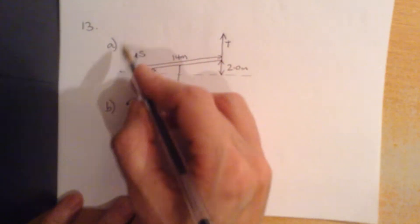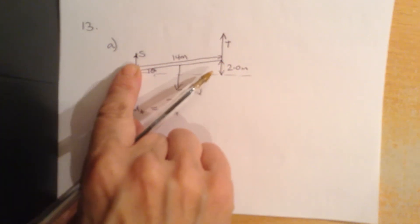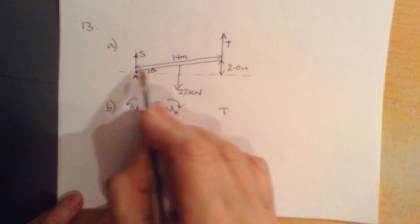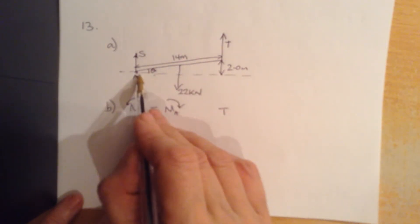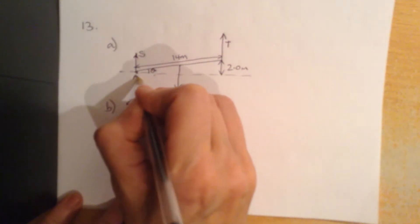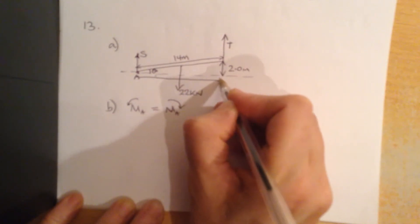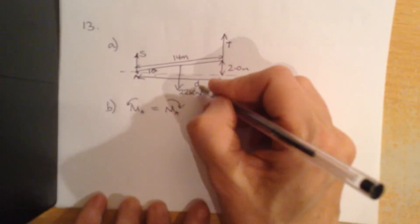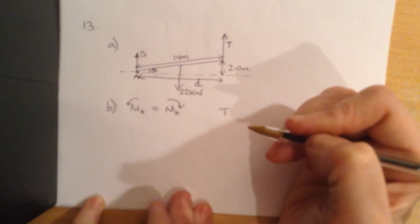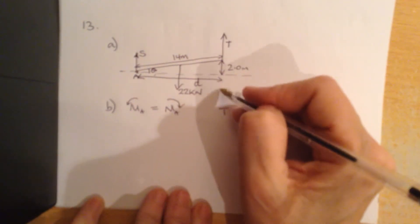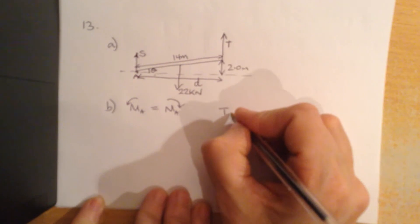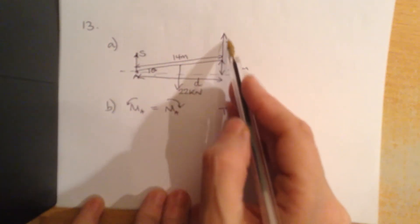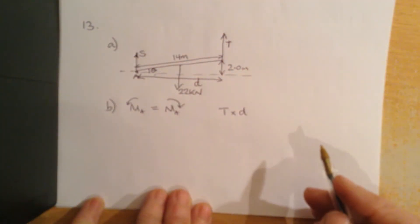So our anti-clockwise moments around A would be T. Now we need this distance here, but I'm going to just call it distance d. We could work it out, but we don't actually need to. So T multiplied by d is the moment around A of the anti-clockwise moments.